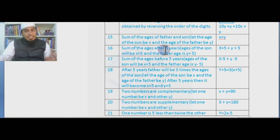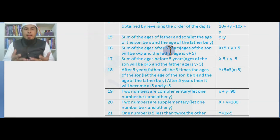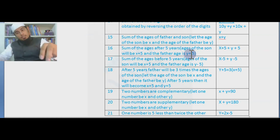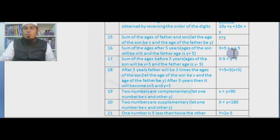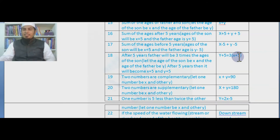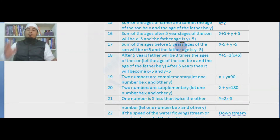This is very crucial — sum of ages after five years. After five years the age of the son is going to be x + 5, and the father's age is going to be y + 5, because after five years everybody's age increases by five. So the sum of their ages after five years is (x + 5) + (y + 5).